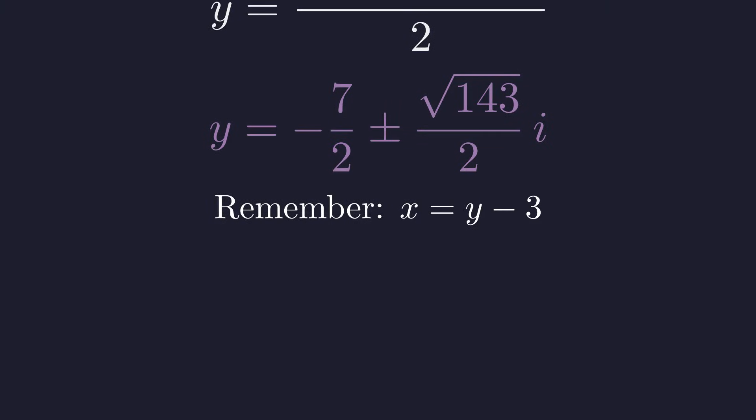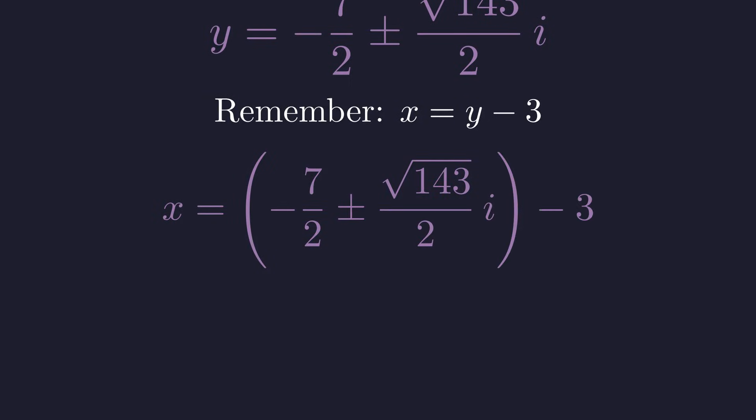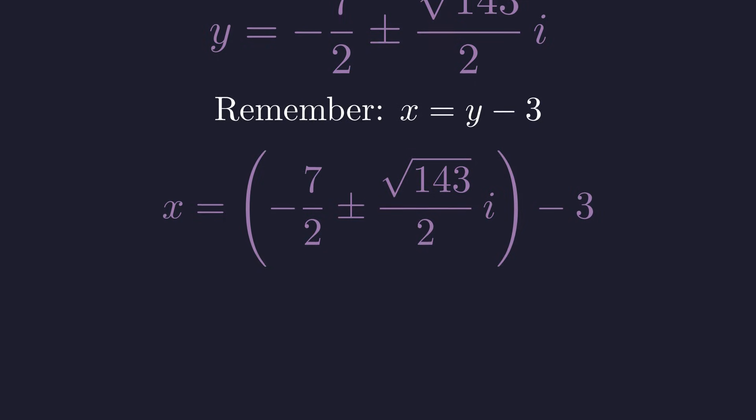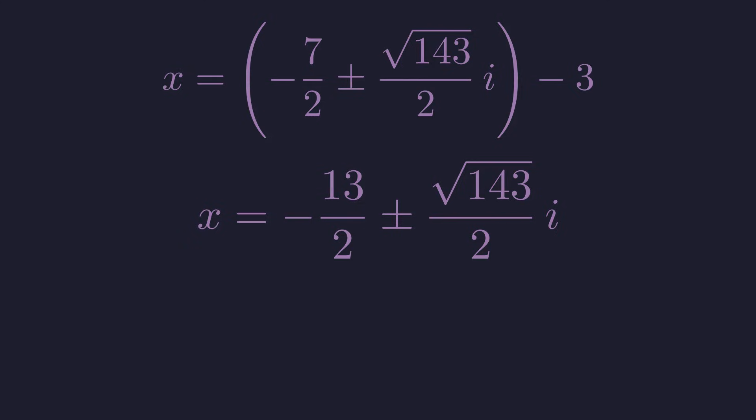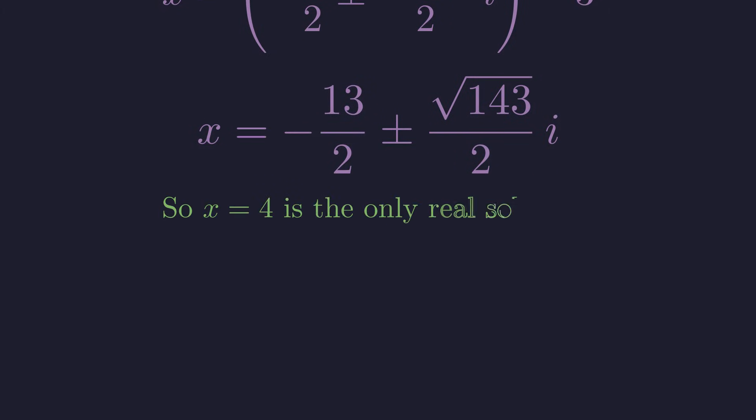So now we substitute x plus 3 back into the equation, which means x is y minus 3. To find x we just need to subtract 3 from the real part of our complex y roots. Combining the real parts, negative 7 halves minus 3 gives us negative 13 halves, and so we arrive at the two complex solutions for x. To summarize, x equals 4 is the only real solution to our original problem, while the other two roots live in the complex plane.